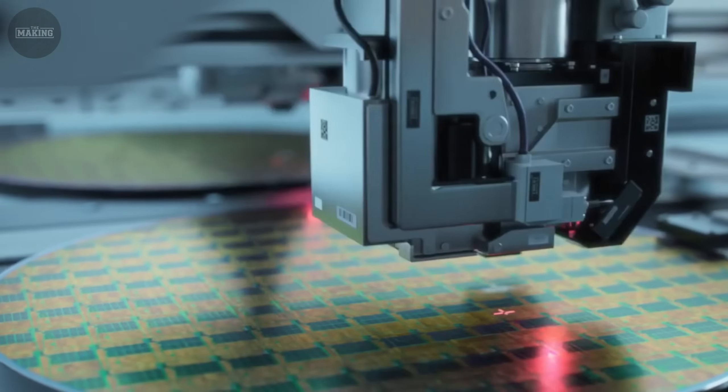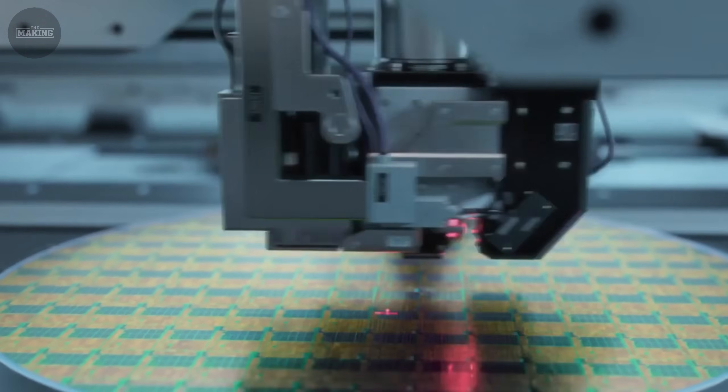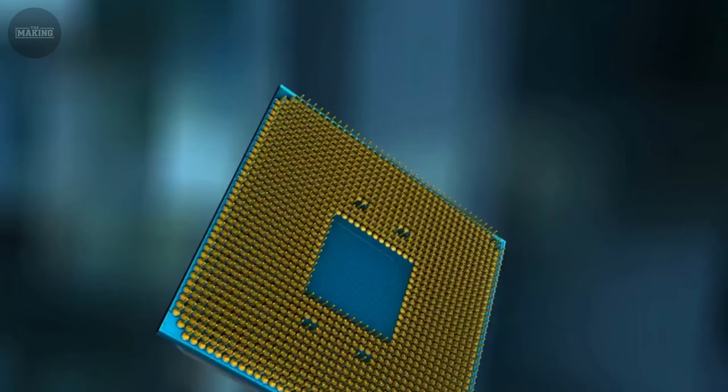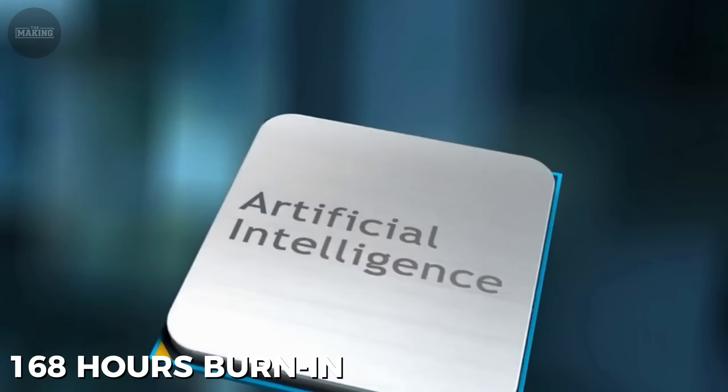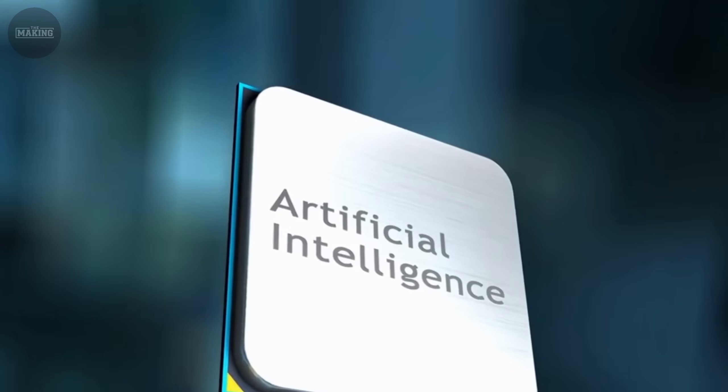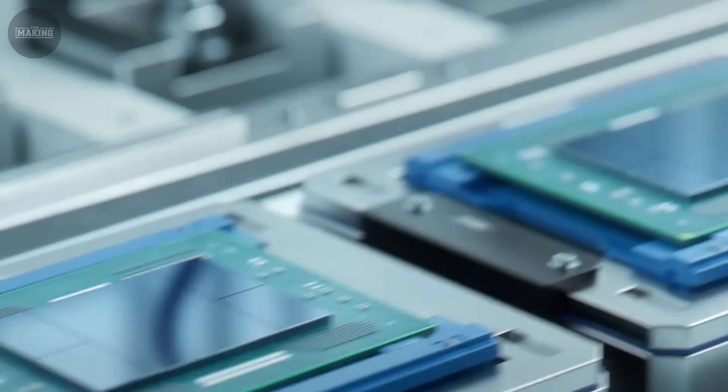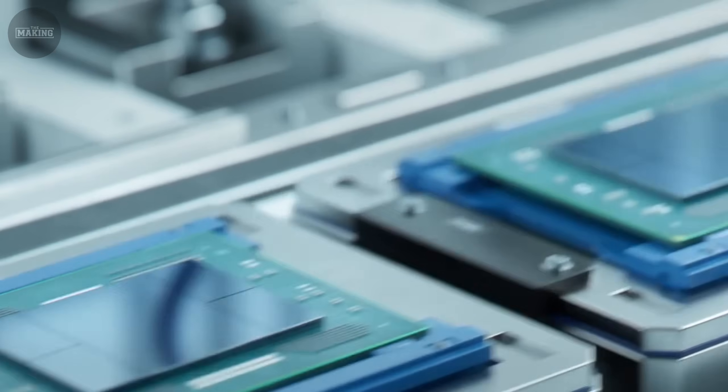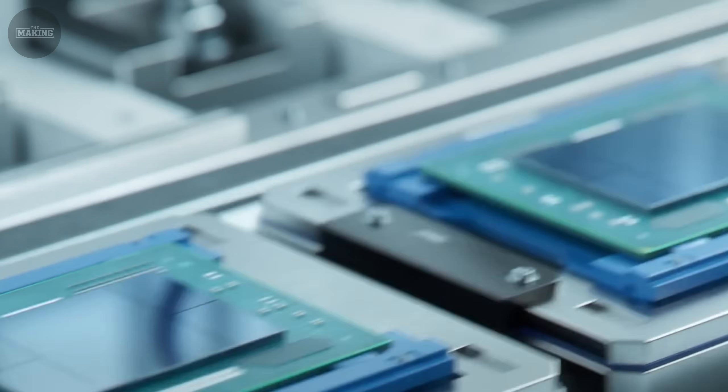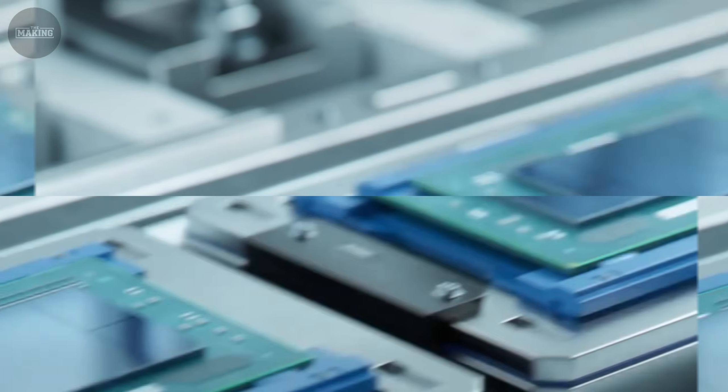Finally comes testing and packaging. Each chip gets probed with thousands of tiny needles to verify every circuit works perfectly. The testing happens at multiple temperatures and voltages to simulate years of real-world use in minutes. Only about 70% of chips pass all tests. The rest get recycled to recover the precious metals inside. Passing chips get cut from the wafer using diamond saws and mounted in protective packages.